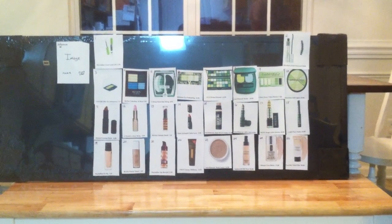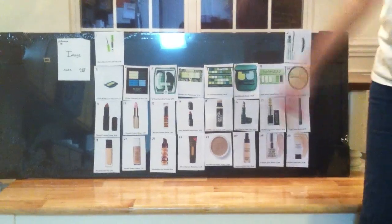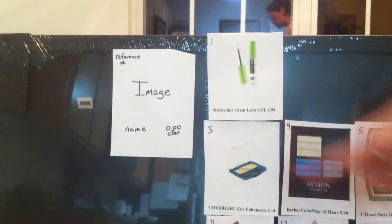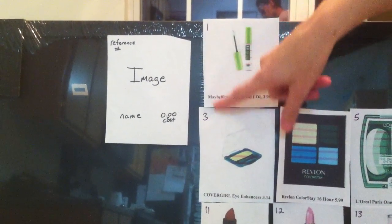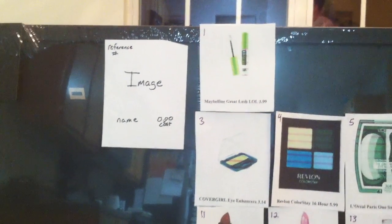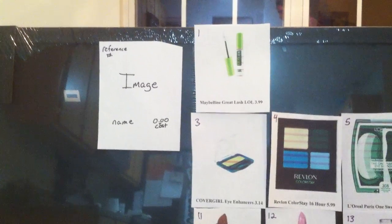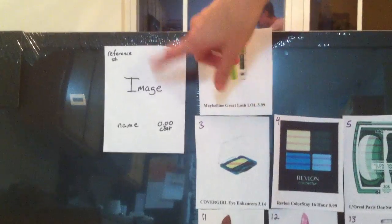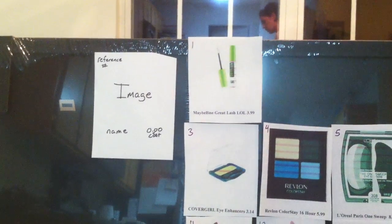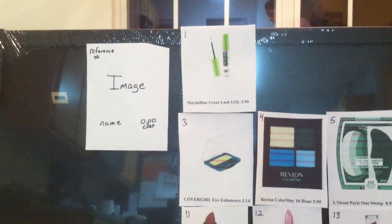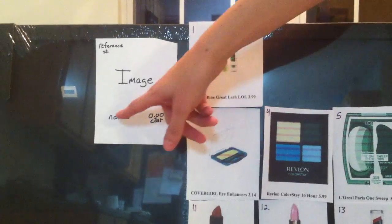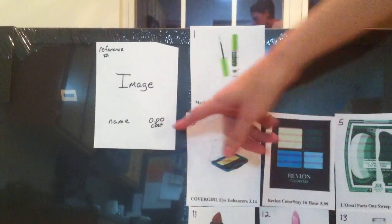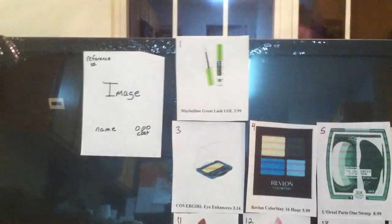To start the explanation of how my table works, I want to show you my key over here. In the top left hand, you'll see the reference number as it shows in these, just like the Periodic Table of Elements. We just have sequential numbers as we go across and down. In the middle, you'll see the image of the actual makeup itself. At the bottom is the name of the makeup, and the numbers are the cost of the makeup.